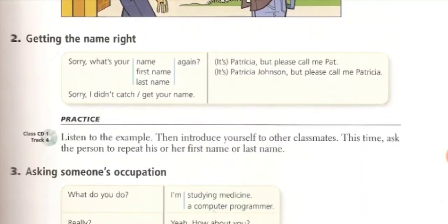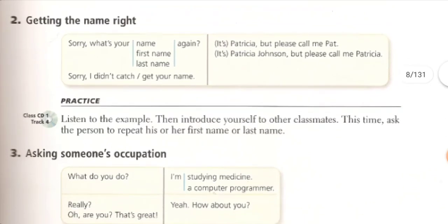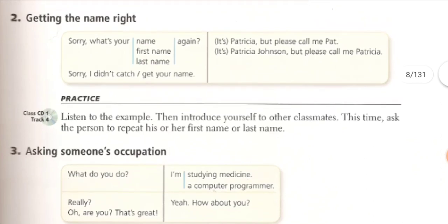Sometimes you do not catch other people's names, so you can ask them to repeat what they said. You can say 'Sorry, what's your name again?' or 'Sorry, what's your first name?' if you didn't catch the first name, or 'Sorry, what's your last name?' if you didn't catch the last name. You can also simply say 'Sorry, I didn't catch your name.' You have the right to ask others to repeat their names, and they can ask you the same.